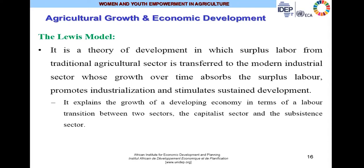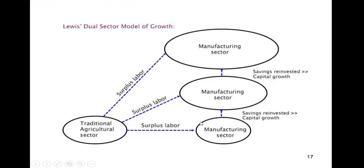Lewis's model can be summarized as the surplus labor model. When agriculture improves, the surplus labor engaged in agriculture will be released and be picked up by the industrial sector. The surplus labor — underemployed, overemployed, idle in rural areas — because of industrialization, will leave the rural areas, migrate out, and be picked up by the industrial manufacturing sector. The Lewis model explains growth in terms of a labor transition between two sectors: the capitalist sector and the subsistence sector.